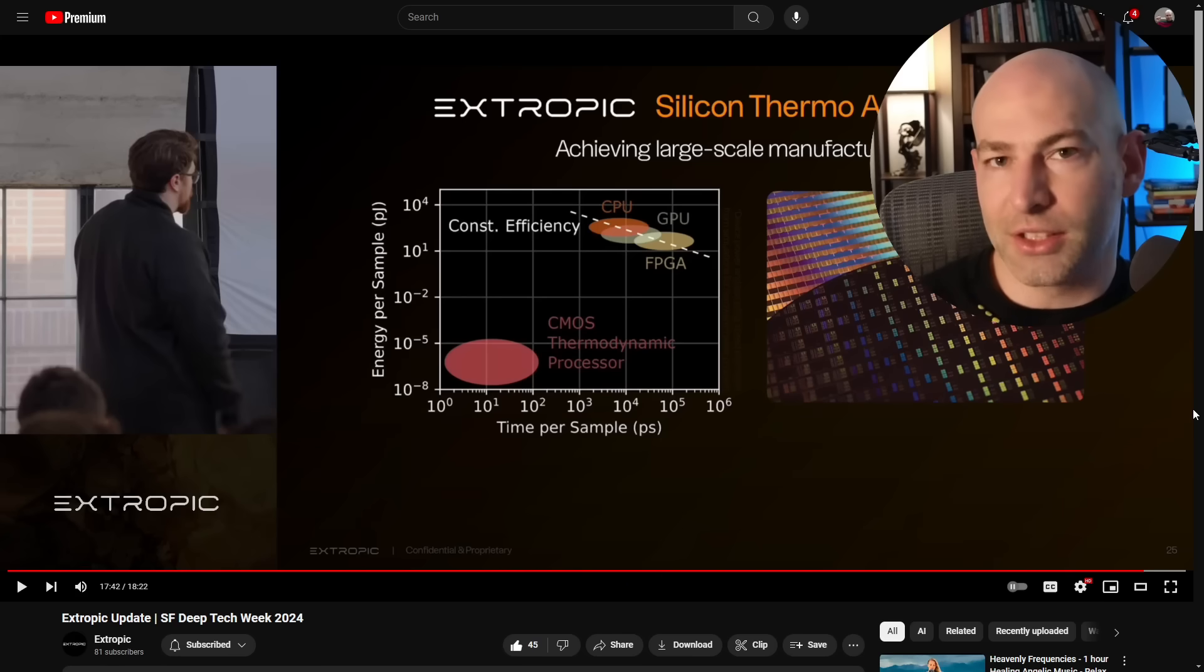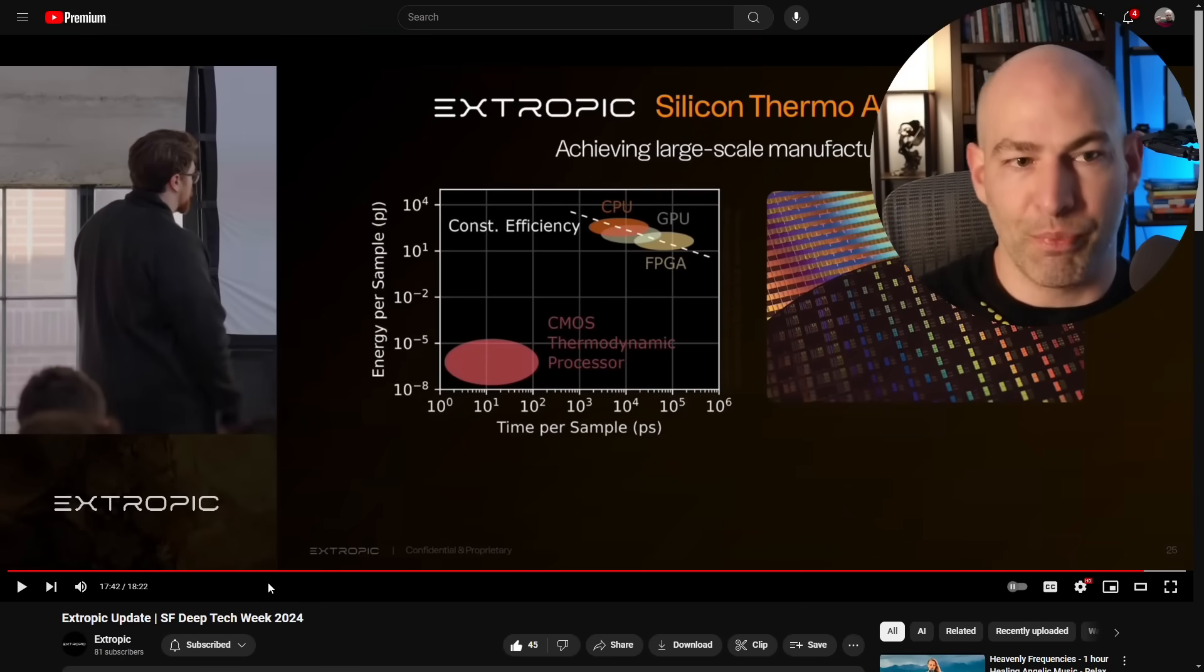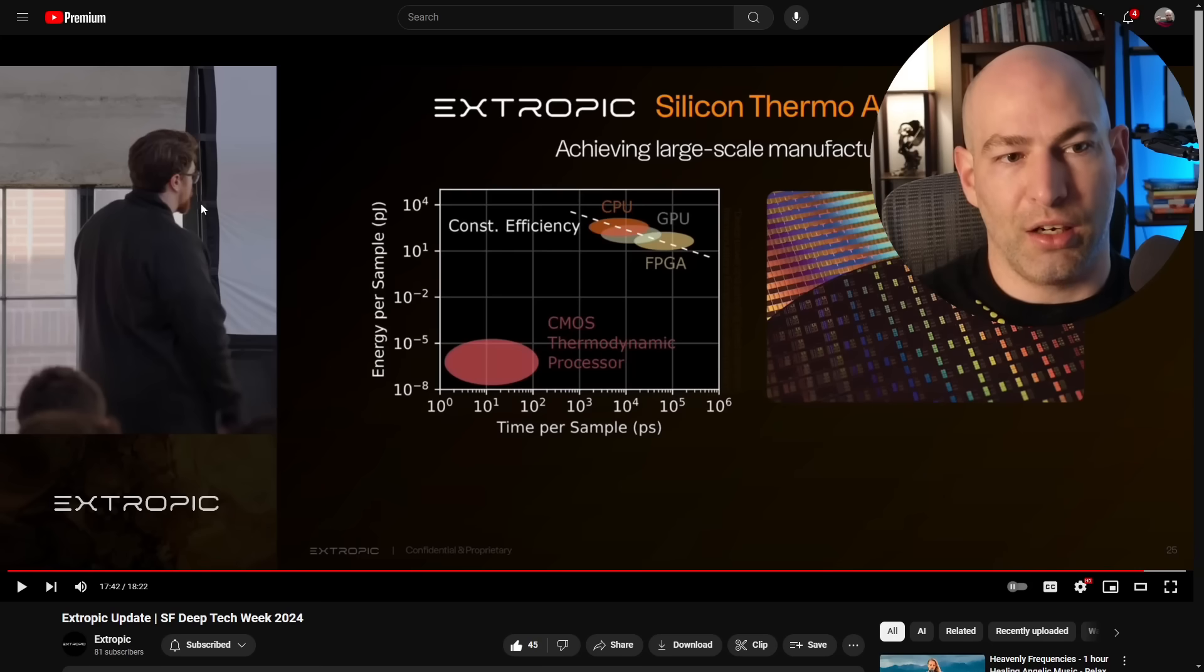It's just I've kind of ceded ground to them to cover the news. But this has been a drastically overlooked topic, and that is thermodynamic computing by Xtropic. And I know that it's overlooked because they have 81 subscribers. Now, the guy presenting here is Guillaume Vaudan, which I'm probably saying his name wrong. I apologize. But he's also known as Beth Jaisos. So he was the guy who started the EACC movement, the effective accelerationist movement.